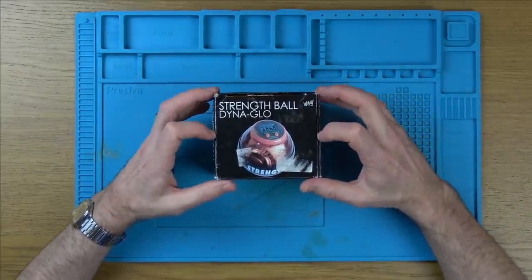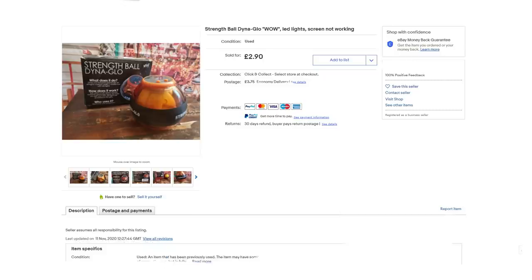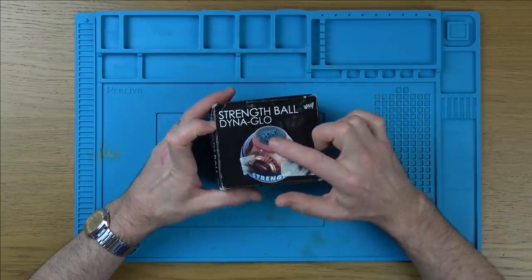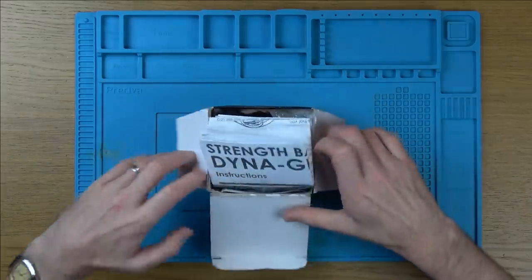I bought it off eBay for £6.60, which is probably the same price as a used working one. The listing said that the lights light up on the ball itself but the display at the top's not working. I think at the top here it counts the revolutions that it does.